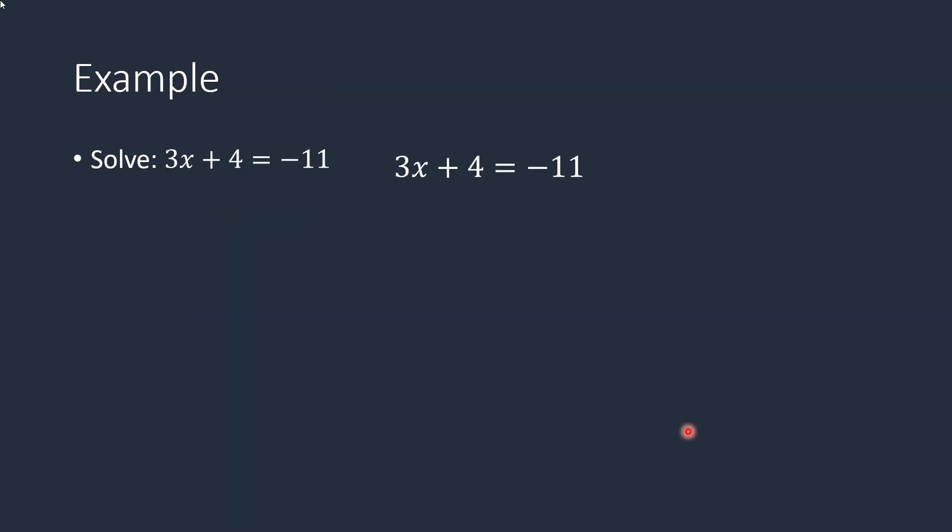So let's look at an example. We have 3x plus 4 equals negative 11. So we want to get rid of this plus 4. So to do that, we're going to subtract both sides by 4. We're going to do the opposite. Notice that we did not have to simplify both sides because both sides were already simplified.